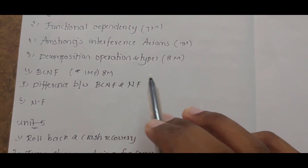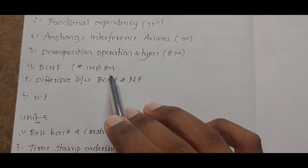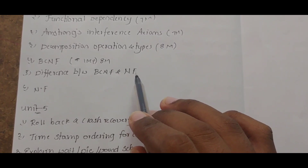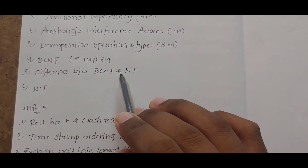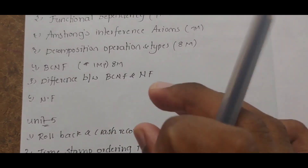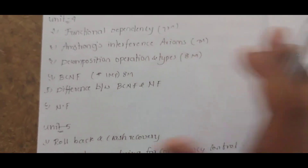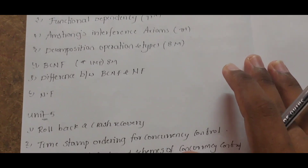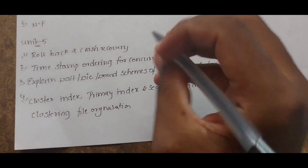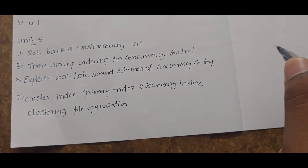For BCNF and normal forms, focus on the differences section — 8 differences for BCNF and similarly for normal form, with just examples for the rest. Coming to Unit 4 also — rollback and crash recovery is very important for 8 marks in both R19 and R20.